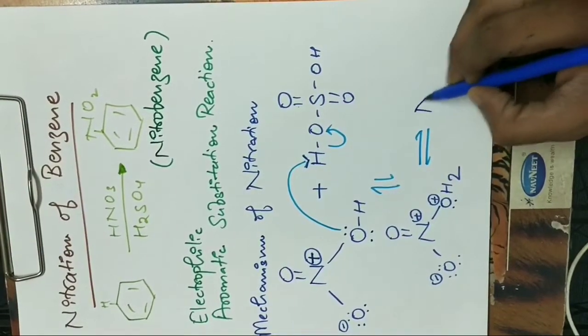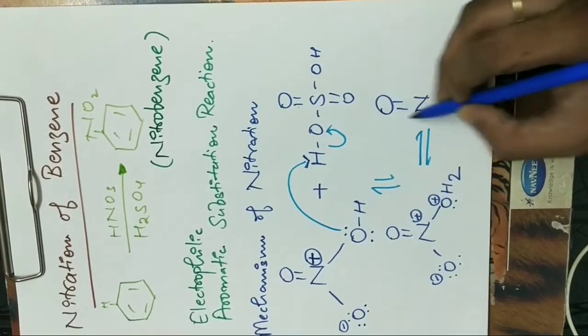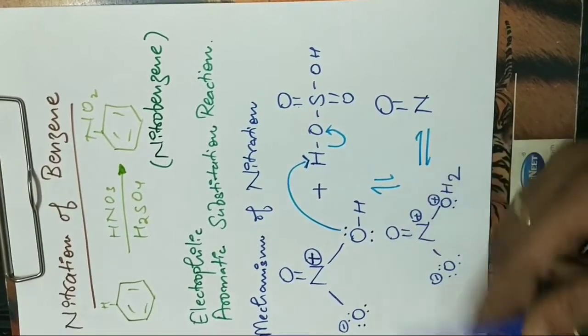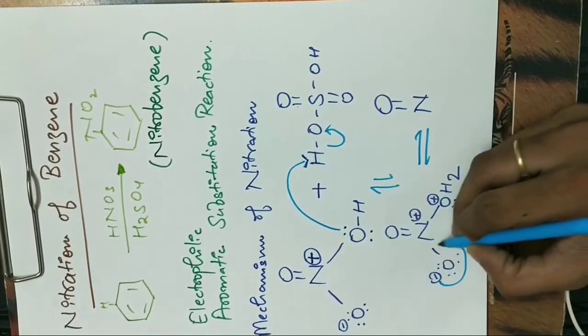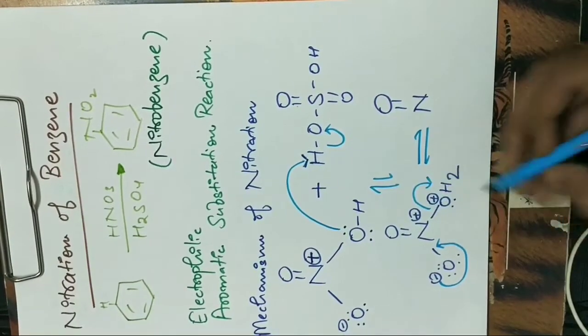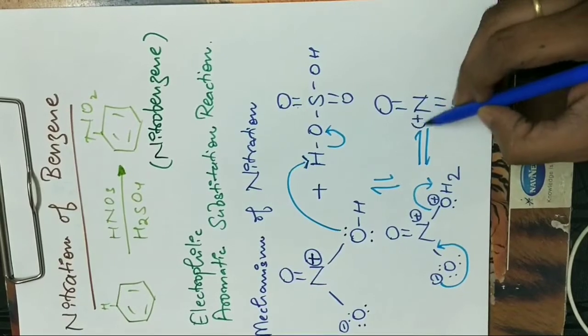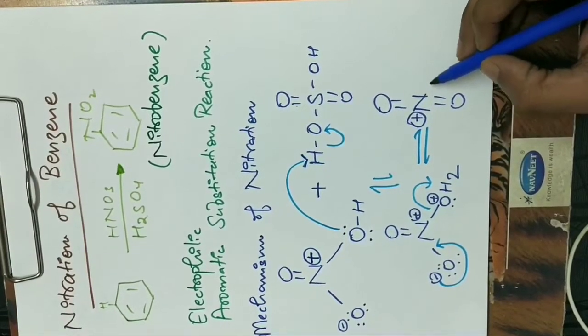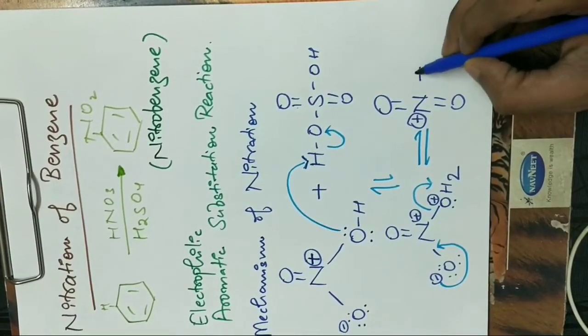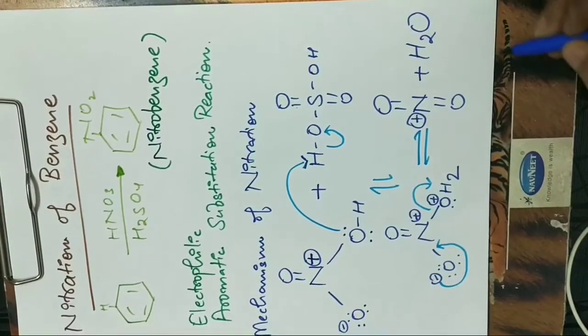Now the formed product will be an electrophile. This negative charge replaces the water molecule, and the electrophile is generated. A side product is also generated, known as water.